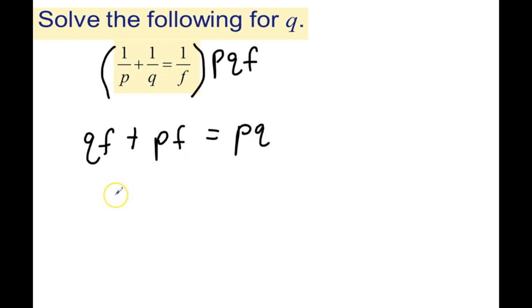By itself, so we'll bring the QF on the left side over here to the right side, so we get PF equals PQ minus QF, and we will factor out the Q.